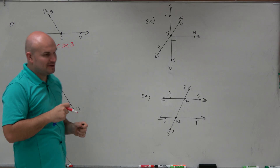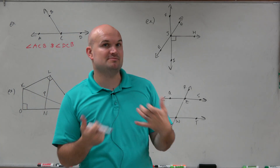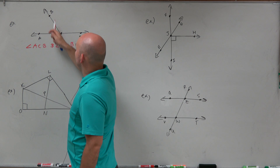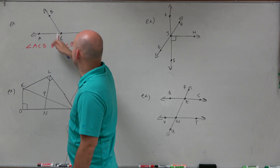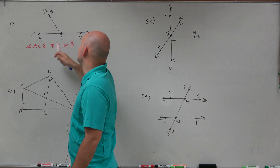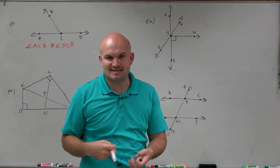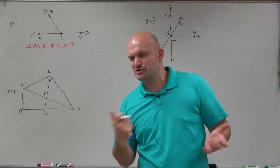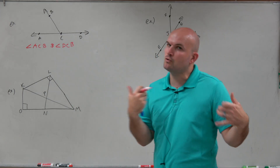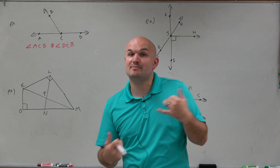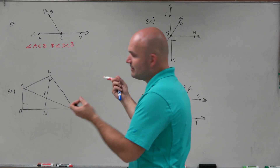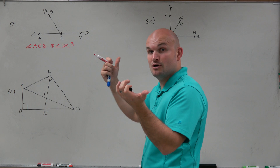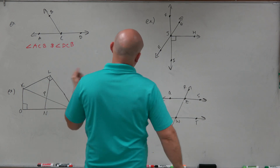Just remember, I'm going to write my angle in one way, but there are multiple ways to write the angle. Instead of ACB you could say BCA; instead of DCB you could say BCD. As long as your vertex is C, it doesn't really matter. So we only have one pair of supplementary angles — nothing else.